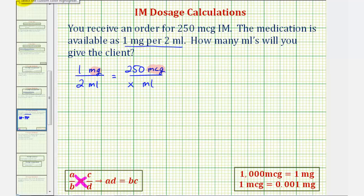To do this conversion, we'll use the fact that 1,000 micrograms equals one milligram. So for this problem, let's convert milligrams to micrograms, and because one milligram equals 1,000 micrograms, we can substitute 1,000 micrograms for this one milligram.